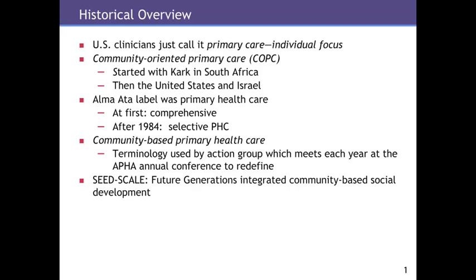The historical overview is important because people have used different labels for different parts of the process. U.S. clinicians just call it primary care because they are dealing with the individual focus and the first contact that patients and health care providers have. During the early days of this field as it developed, and particularly as a result of the work of CARC in South Africa, there was a common term used in public health in the United States: community-oriented primary care, or COPC.